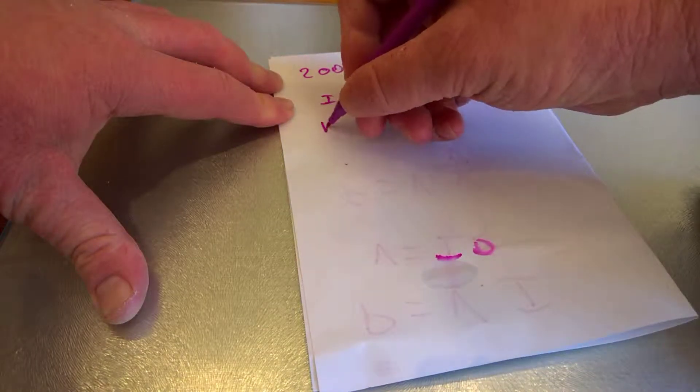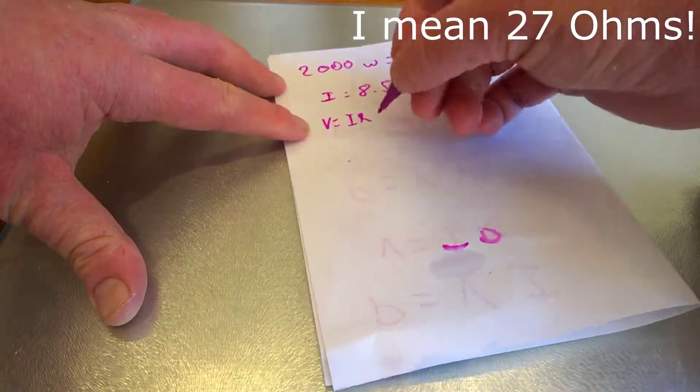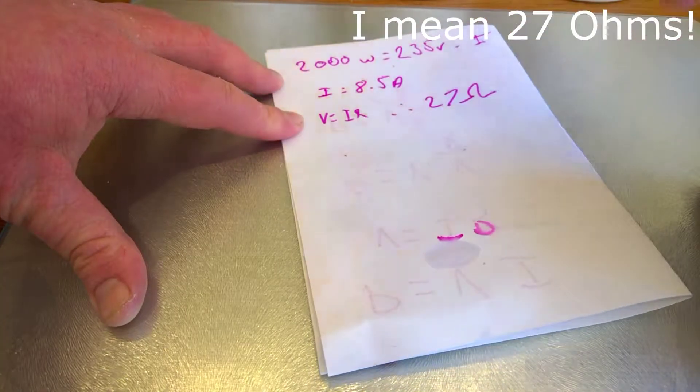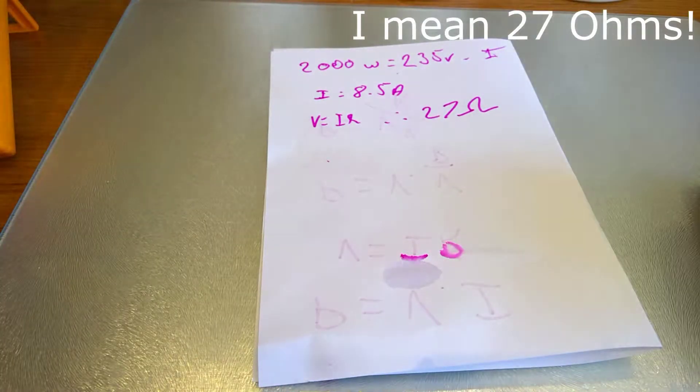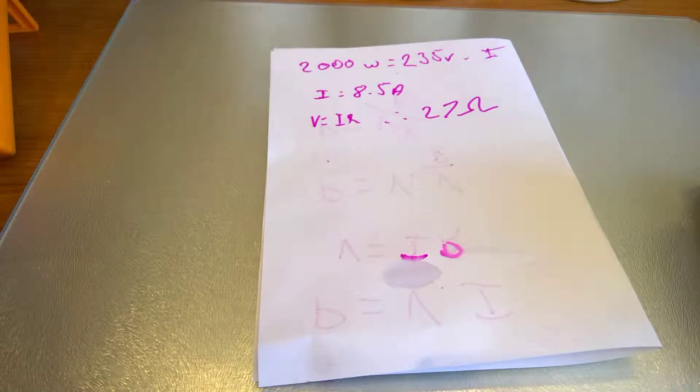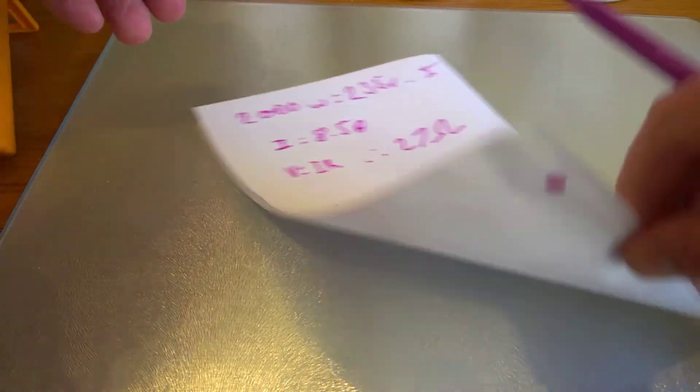So if we put that back into Ohm's Law, we would say that the resistance is about 27 ohms, or thereabouts. So we've got an element that's about 27 ohms. We now have, we can actually put this into our power formula, which P equals V squared over R.